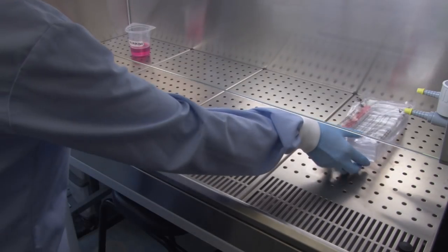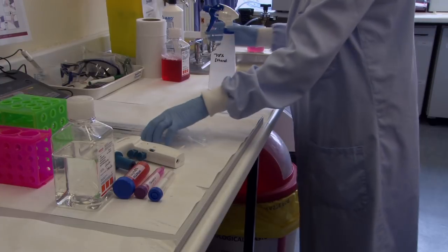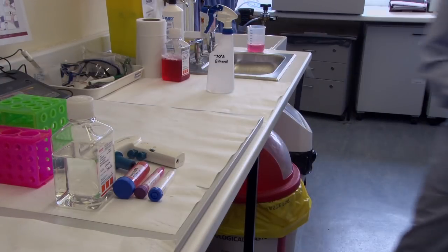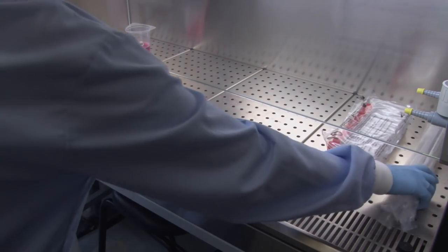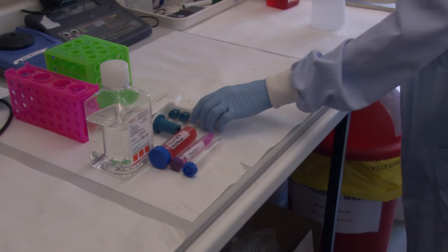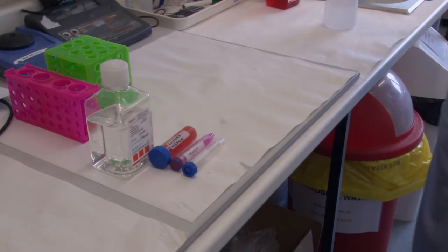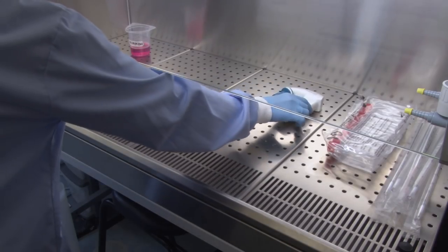Sterilizing all of the equipment using ethanol prior to placing it in the cabinet is one of the key ways of preventing contamination. Arrange your equipment in the cabinet, to the right if you're right-handed. Don't bring too many items into the cabinet as this can disrupt the air flow.